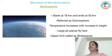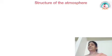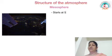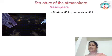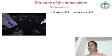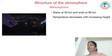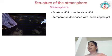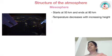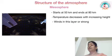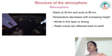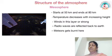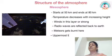The next layer is mesosphere. This starts at 50 km and ends at 80 km. Winds in this layer are very strong. The temperature here decreases with increasing height. Radio waves transmitted from earth are reflected back to earth from here. Meteors nearing the earth get burnt here. The uppermost limit of the mesosphere is the mesopause.